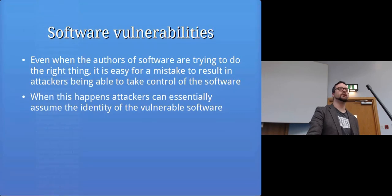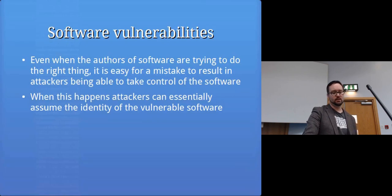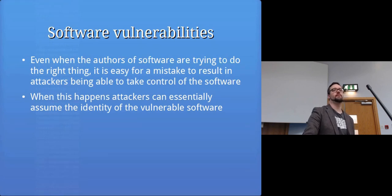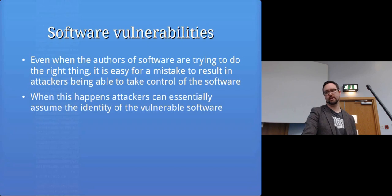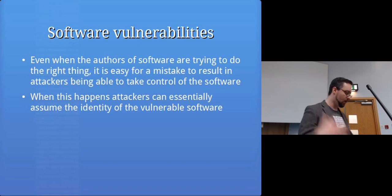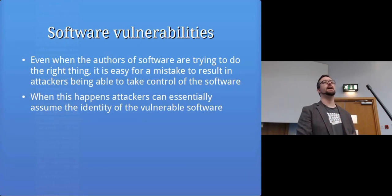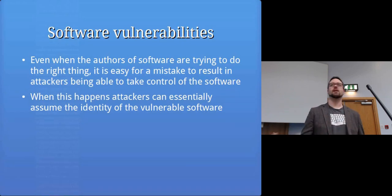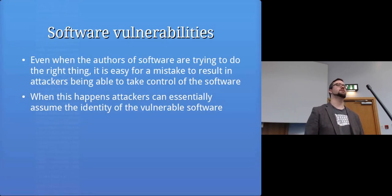Even when you're trying to do the right thing, it's really easy to make a programming mistake that causes these kinds of problems. A lot of software vulnerabilities can basically get narrowed down to one line of code — a one-line mistake can cause massive security problems. If an attacker can subvert the way your program is behaving, they can take control of it, and because that program is running with your permissions, the attacker is now running with your permissions on your computer.